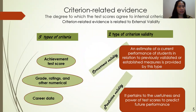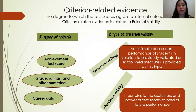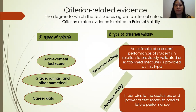Criterion-related evidence refers to the degree to which test scores agree with an external criterion. It is related to external validity. Three types of criteria are: achievement test scores, grades, ratings, and other numerical career data.